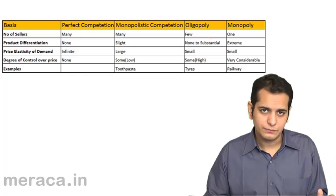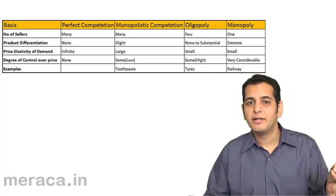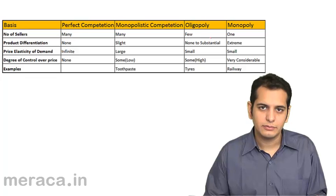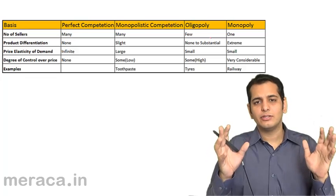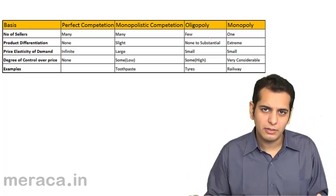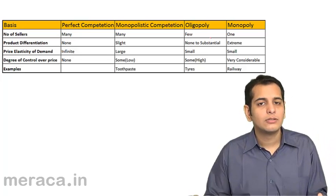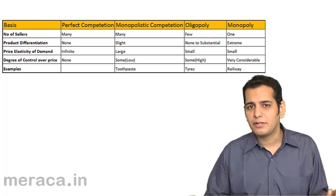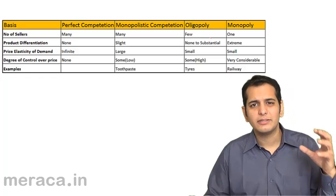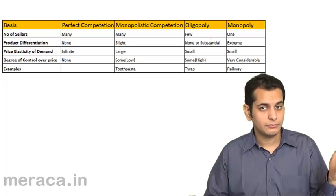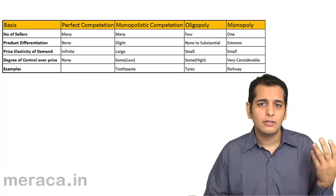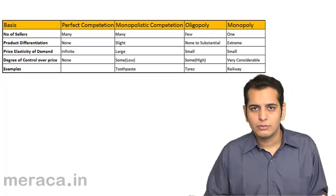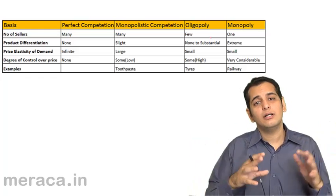For examples: payment gateways like Visa and Mastercard — there are only a couple of players. The same is the case with tire manufacturers; you do not have hundreds of them, only a limited few. Airplane manufacturers are another example — basically just Boeing and Airbus. So these are examples of oligopoly: few sellers but a large number of buyers.